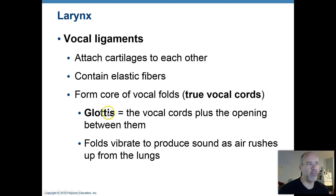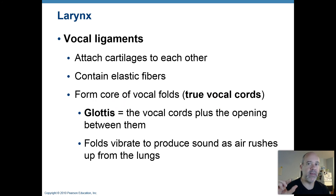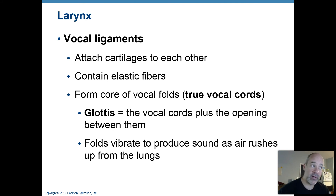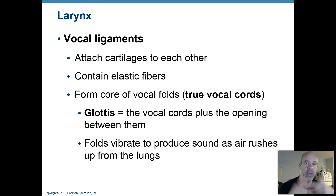Another term you need to be familiar with is glottis. The glottis includes your true vocal cords and the opening between them. When air is passing down into the larynx from the laryngopharynx, it has to go through that opening, so the vocal cords will be open with a space in between them. Those two things together — the vocal cords and the space between them — are referred to as the glottis.